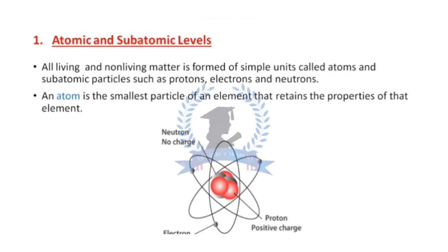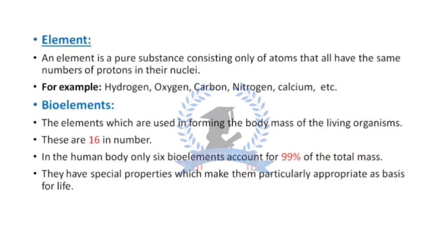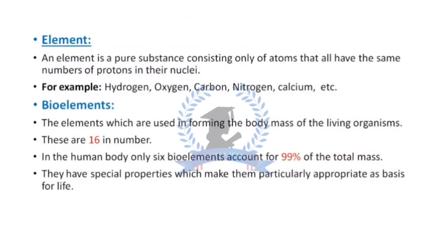An element is a pure substance consisting only of atoms that all have the same numbers of protons in their nuclei. There are different kinds of atoms. For example, hydrogen has only one proton, it has atomic number one. If an atom has two protons, it is helium. If an atom has seven protons, then it is nitrogen. So every atom is different from another atom on the basis of number of protons.